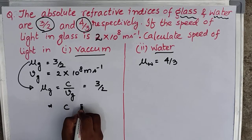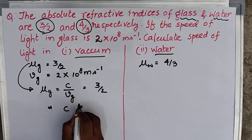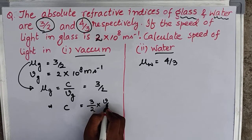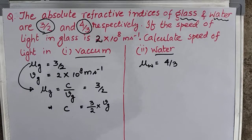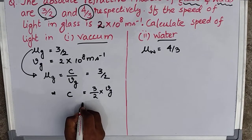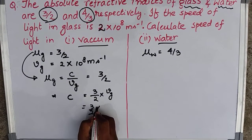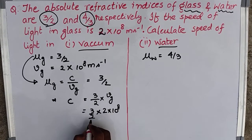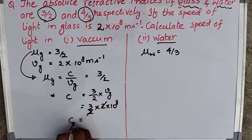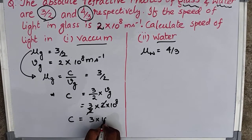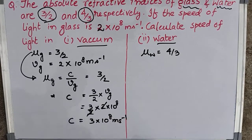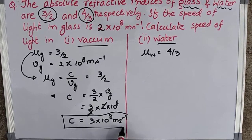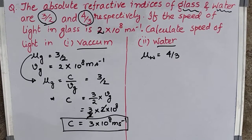To get C, we can take Vg to the other side: so C = (3/2) × Vg. The value of Vg is 2×10⁸, which is given. So 2 and Vg cancel out, giving C = 3×10⁸ meter per second, which is a widely well-known fact.